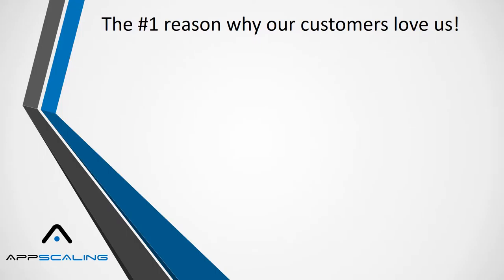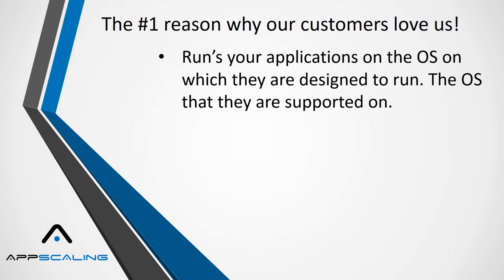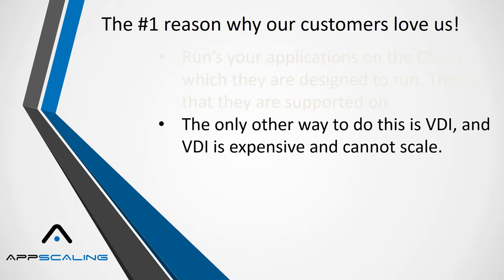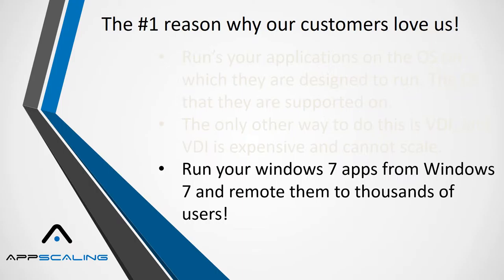The number one reason our customers love us: App Scaling runs your applications on the OS on which they're designed to run — the OS that they are supported on. The only other way to do this is VDI, and VDI is expensive and cannot scale. Run your Windows 7 apps from Windows 7 and remote them to thousands of users. You can run Windows 7 applications on a Windows 7 host controller, then port them out to all of your users.